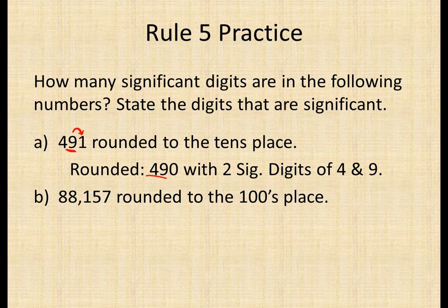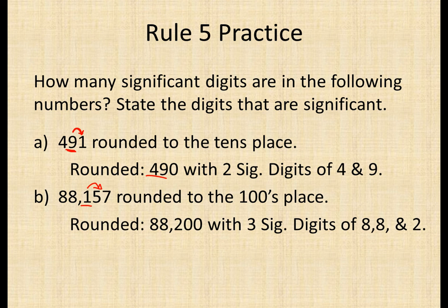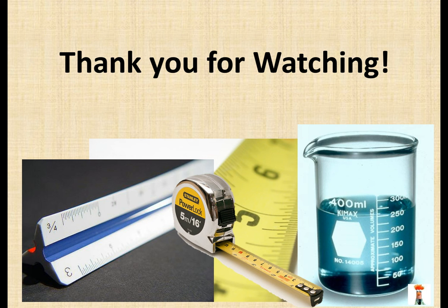In the second example, 88,157 rounded to the hundreds place — the 1 is in the hundreds place. We look back and ask: is 5 five or greater? It is, so it becomes 88,200, which has three significant digits: 8, 8, and 2. Thank you for watching — if you have any questions, make sure you bring those to class.